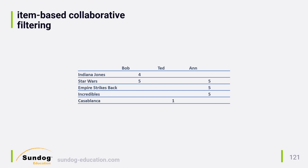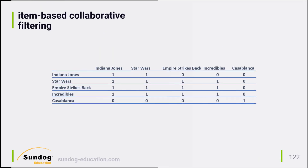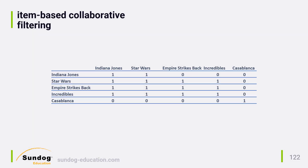Of course, cosine similarity is just one of many ways to measure the similarity between items, and there may be other ways of scoring these item pairs that aren't based on similarity at all. So now we can compute the cosine similarity scores between every possible item pair based on the users each item has in common who rated them. In this example, all of our scores come out to 1 or 0 because we have so little data to work with, but in the real world you'd see more interesting and meaningful numbers here.